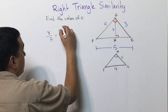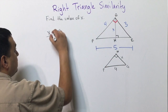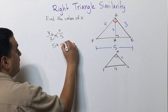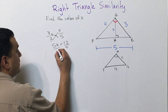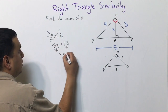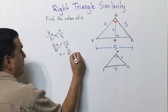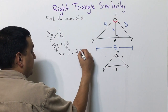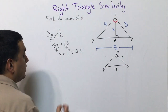Cross-multiplying gives me 5x = 12. Dividing by 5 tells me x = 12/5, which reduces to 2.4 as a decimal.